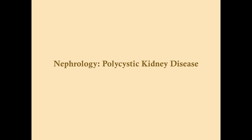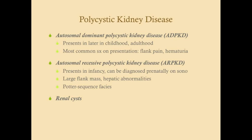As we talk about polycystic kidney disease, I also included renal cysts, which has nothing to do with polycystic kidney disease but is sort of a cyst, so this is a good place to talk about it. The two kinds of polycystic kidney disease are autosomal dominant polycystic kidney disease and autosomal recessive polycystic kidney disease.